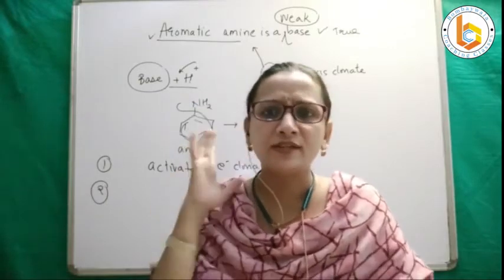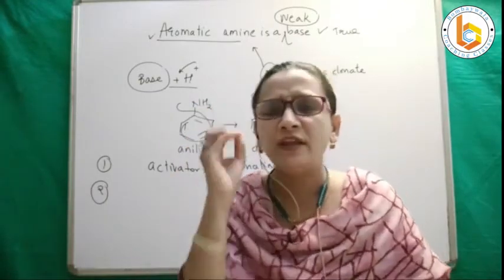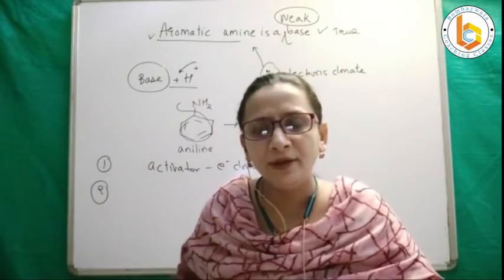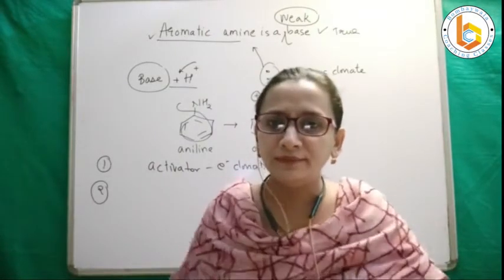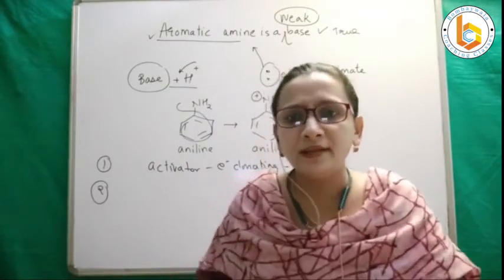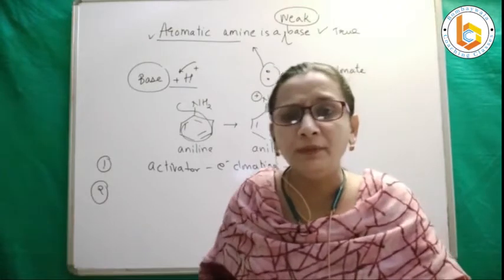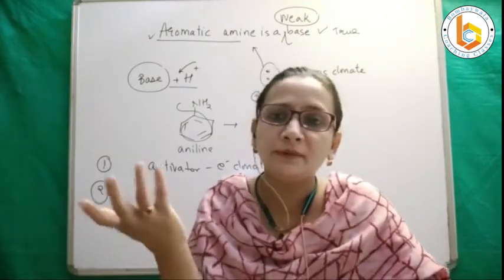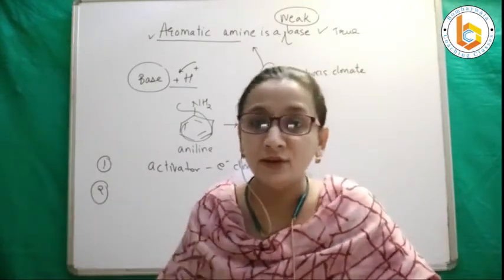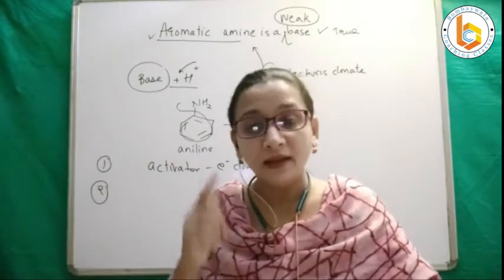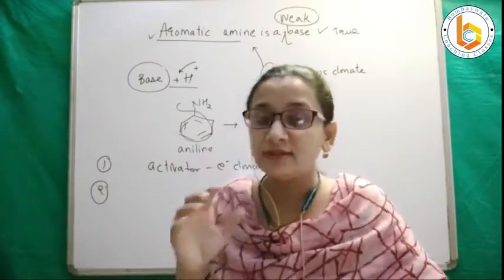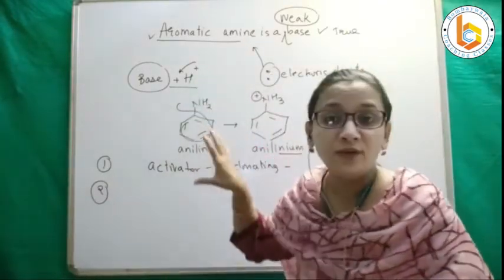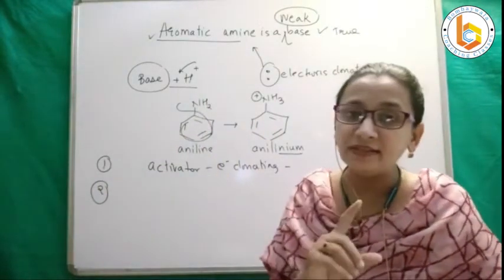This is the first explanation: as the lone pair of electrons are not present on nitrogen, but they are part of the resonating ring — they are all the time moving with benzene, getting delocalized — electrons are not available on nitrogen, and hence it is a weak base. This is the first explanation and it is very basic.